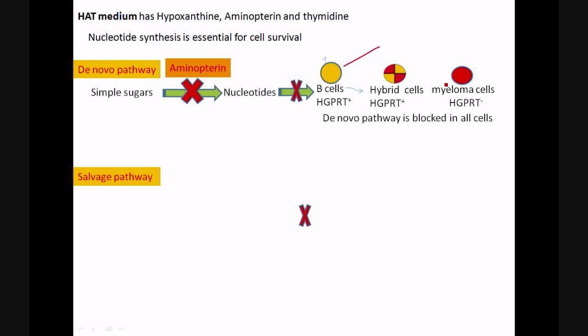The de novo pathway is blocked in all the cells. So for the cell to survive, the salvage pathway, the other pathway for nucleotide synthesis, should work. This pathway uses the hypoxanthine in the medium and that is converted by an enzyme, hypoxanthine-guanine phosphoribosyltransferase, to nucleotides.